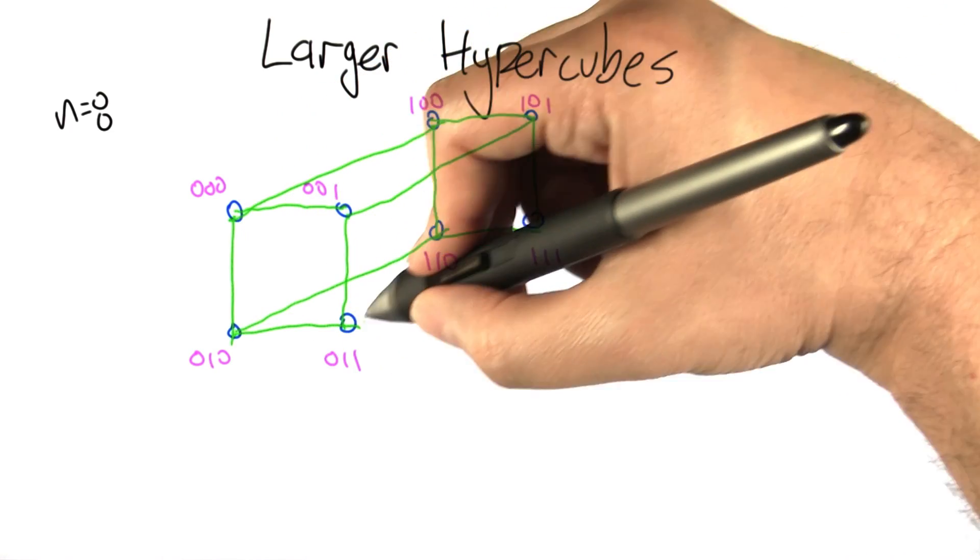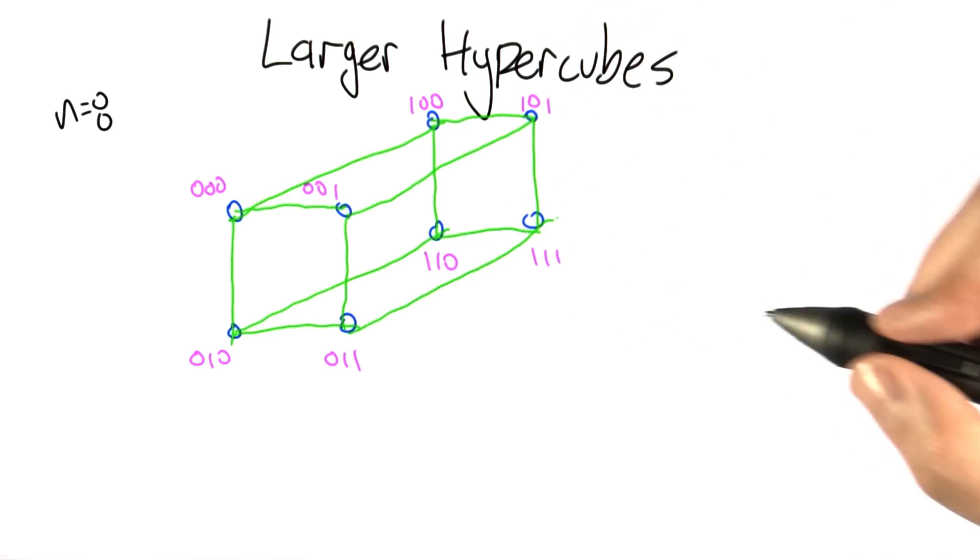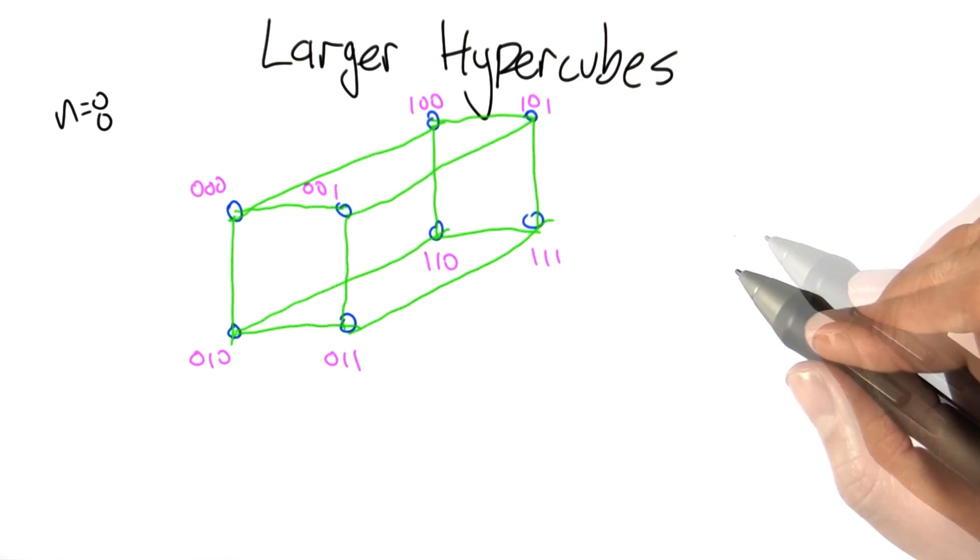Perhaps you can see why these are called hypercubes. This is a cube. The previous one was a square. What's the next one going to be?